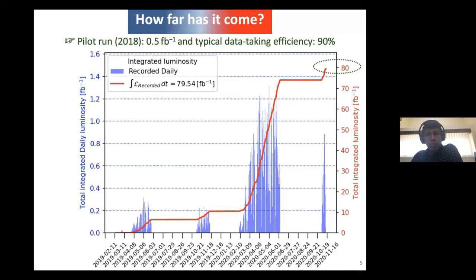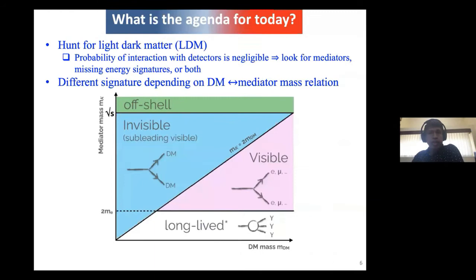Very briefly about the data we have: we want to go to 50 inverse attobarn of data. But so far, we're in the beginning of the experiment and have just recorded 8 inverse femtobarn of data. There was data recorded during the pilot run in 2018, where we recorded about 0.5 inverse femtobarn. Data taking efficiency is about 90%. We want to improve on that, but this is the current status. As any new experiment, you need to understand the detector and then optimize more on how to improve data recording efficiency.